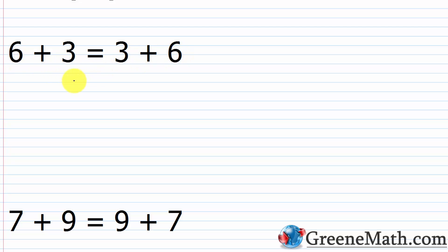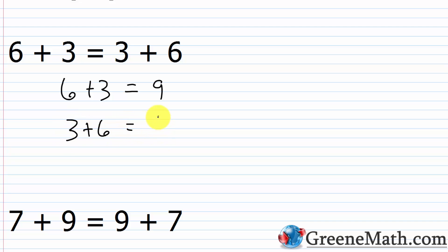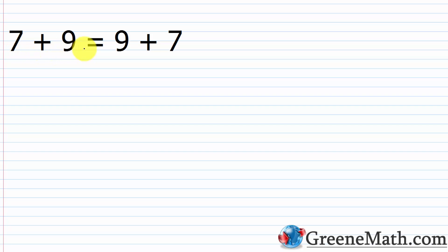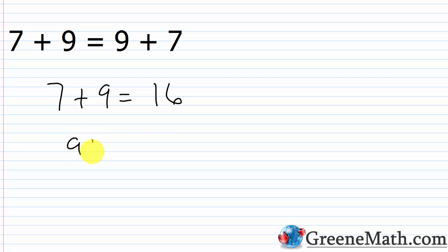Six plus three equals nine and three plus six equals nine, so changing the order of the addends does not change the sum. As another example, seven plus nine equals nine plus seven — seven plus nine is sixteen, and nine plus seven is sixteen as well.